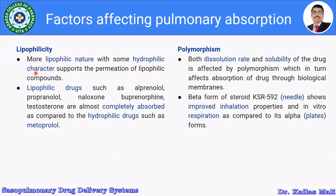More lipophilic nature with some hydrophilic characters supports the permeation of lipophilic compounds through the lungs. Lipophilic drugs such as alprenolol, propranolol, naloxone, buprenorphine, and testosterone are most completely absorbed as compared to hydrophilic drugs such as metoprolol. This indicates that sufficient lipophilicity is required in order to deliver the drug to the pulmonary route.